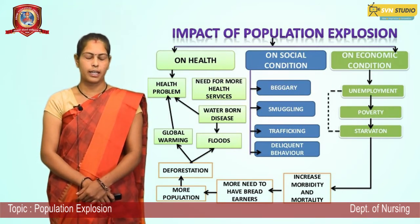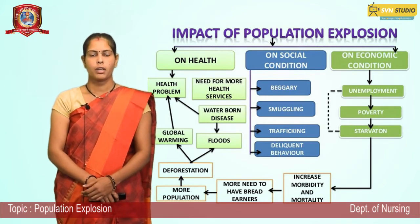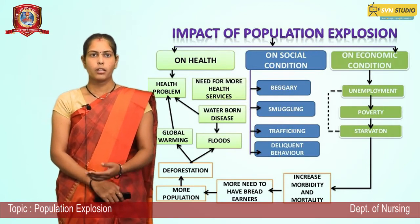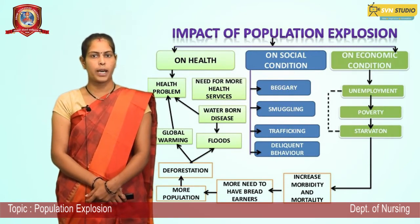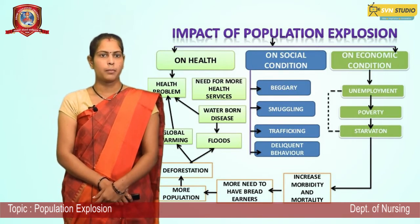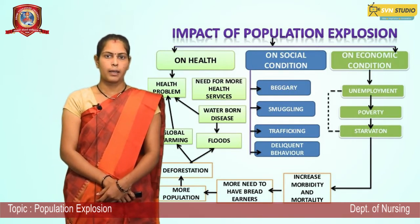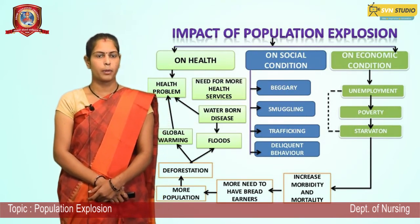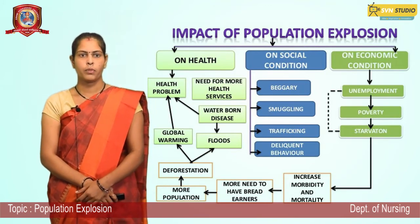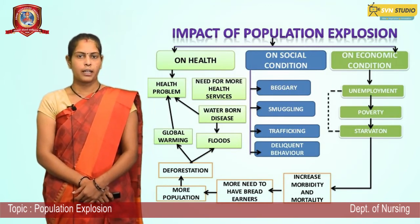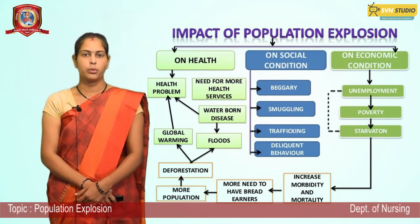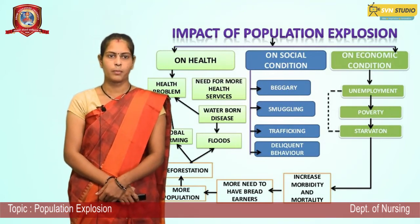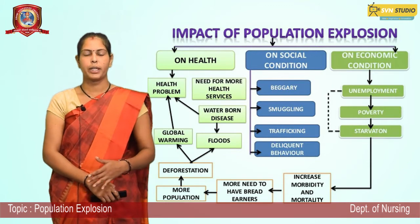More health services are in high demand due to overpopulation. On social conditions, basic needs are not being fulfilled, which is causing beggary. People are resorting to smuggling due to money problems, and trafficking and road traffic problems are also increasing. People begin engaging in criminal and delinquent behavior because their needs are not met.